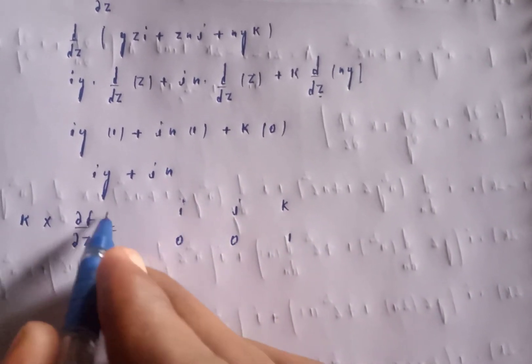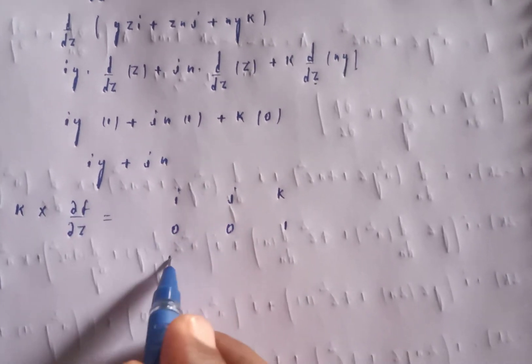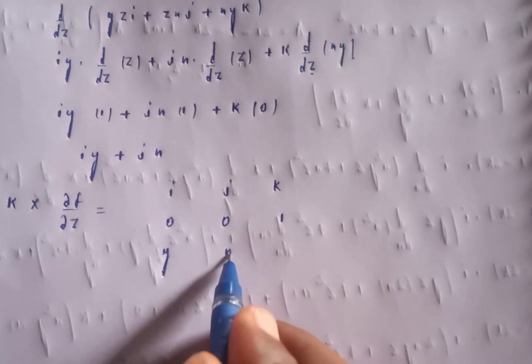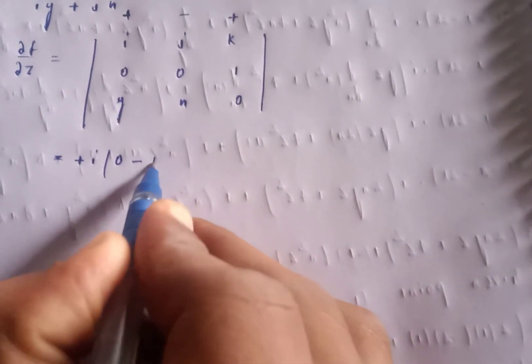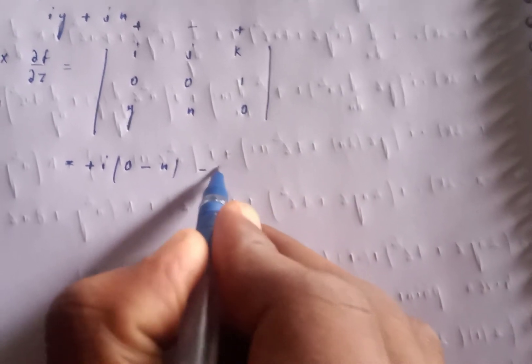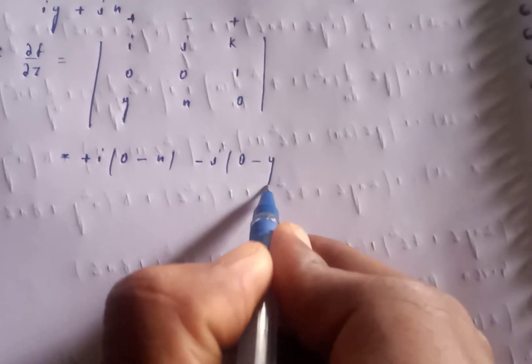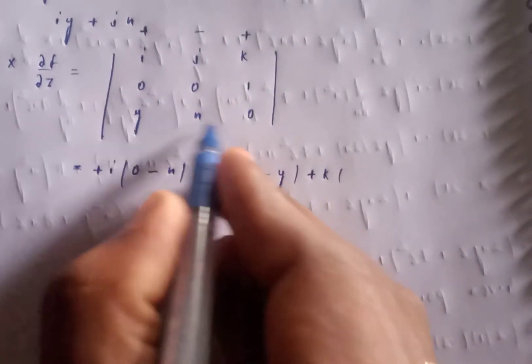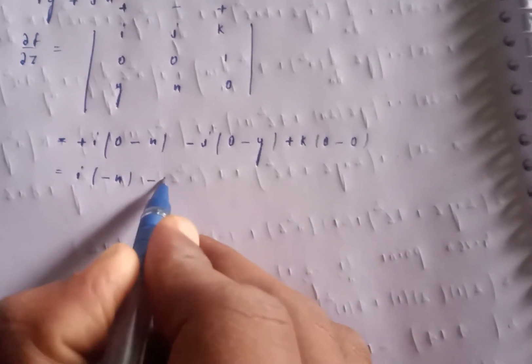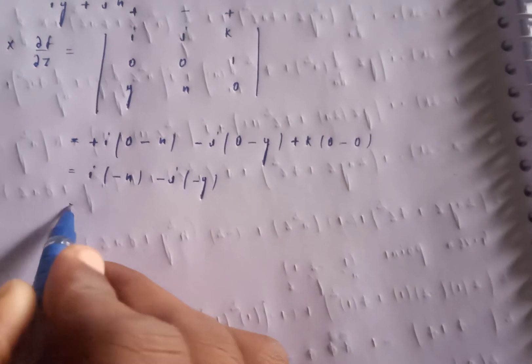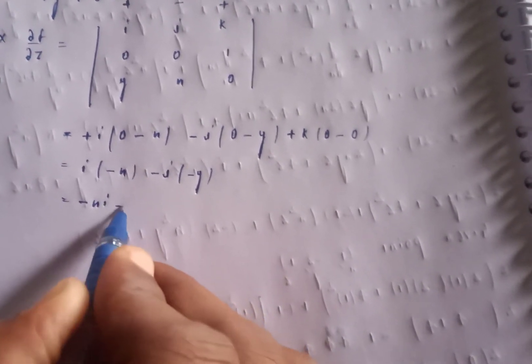Evaluating k cross ∂f/∂z: expanding gives i of zero minus zero, minus j of zero minus y, plus k of zero minus zero. So k cross ∂f/∂z equals minus xi minus jy, which simplifies to minus xi plus jy with sign correction, giving minus xi minus yj.